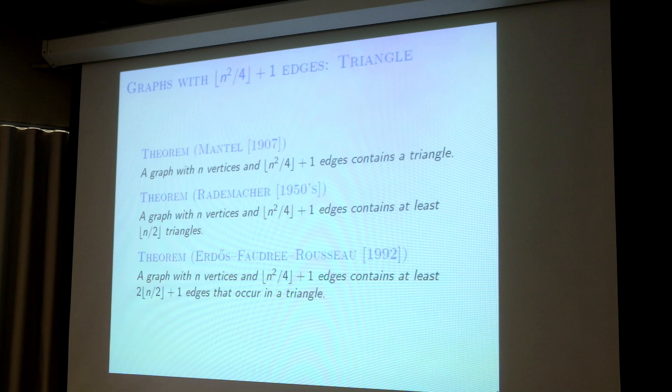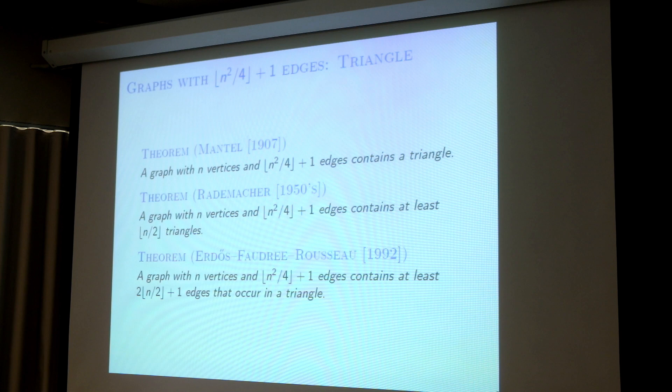This is still just a linear number of edges occurring in a triangle. And again, this is sharp, by the same example: you take a balanced complete bipartite graph plus one edge. Basically, if you want to have an edge occurring in a triangle, then you have to use that plus edge. So that's why you don't have too many edges.